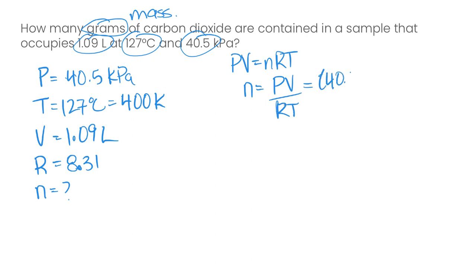We've got 40.5. Our volume is 1.09. And then divide that by our gas constant 8.31 times our temperature in Kelvin, which is 400. And so if we were to solve this equation, you get 0.01328 moles.